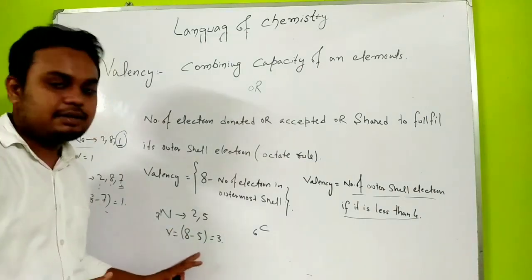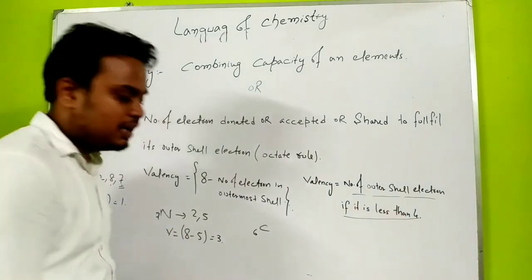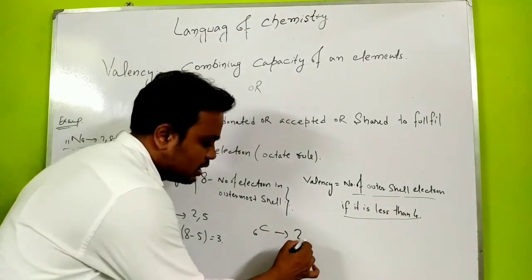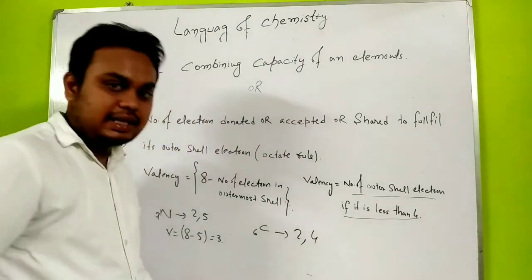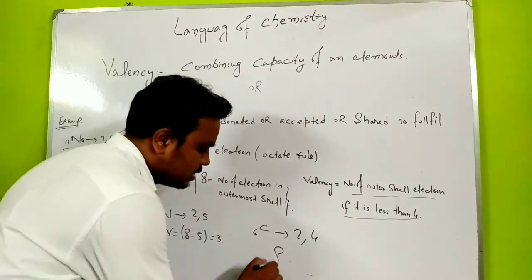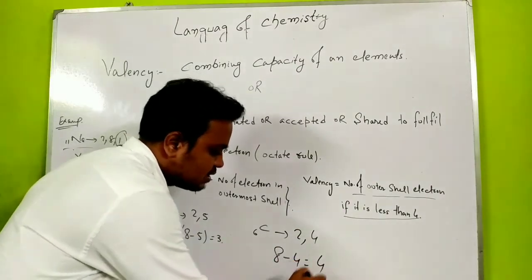Carbon has atomic number 6, so configuration is 2 and 4. Last shell has 4, so 8 minus 4 means its valency is equal to 4.